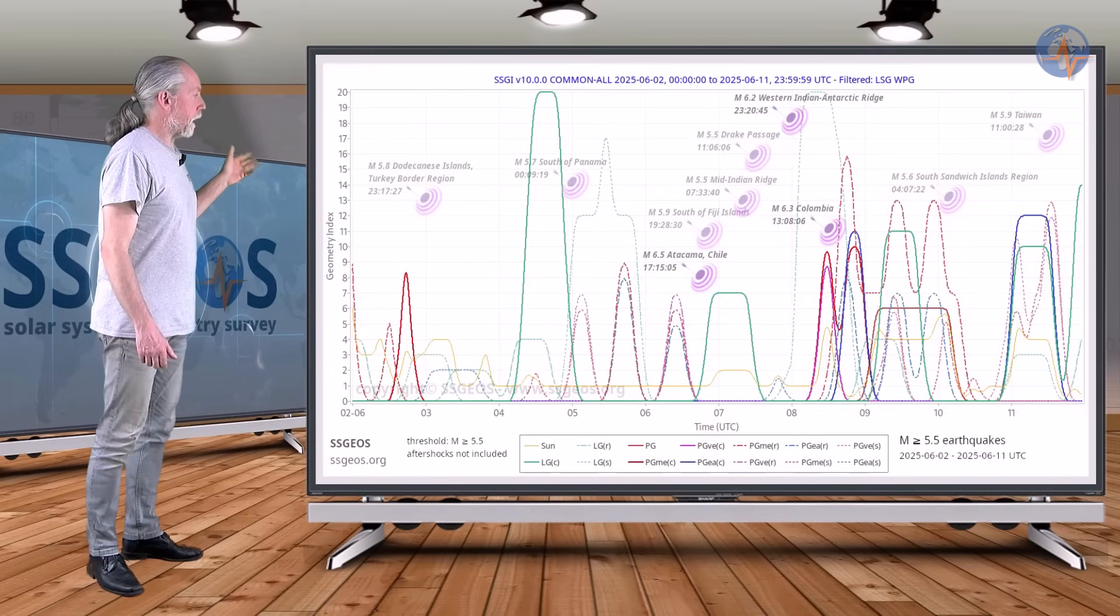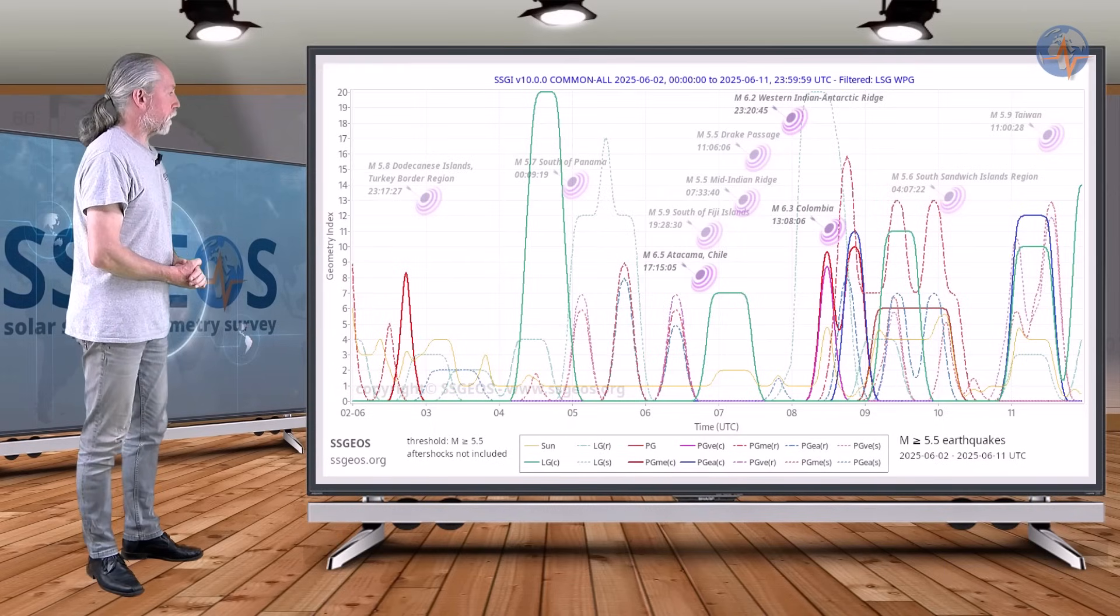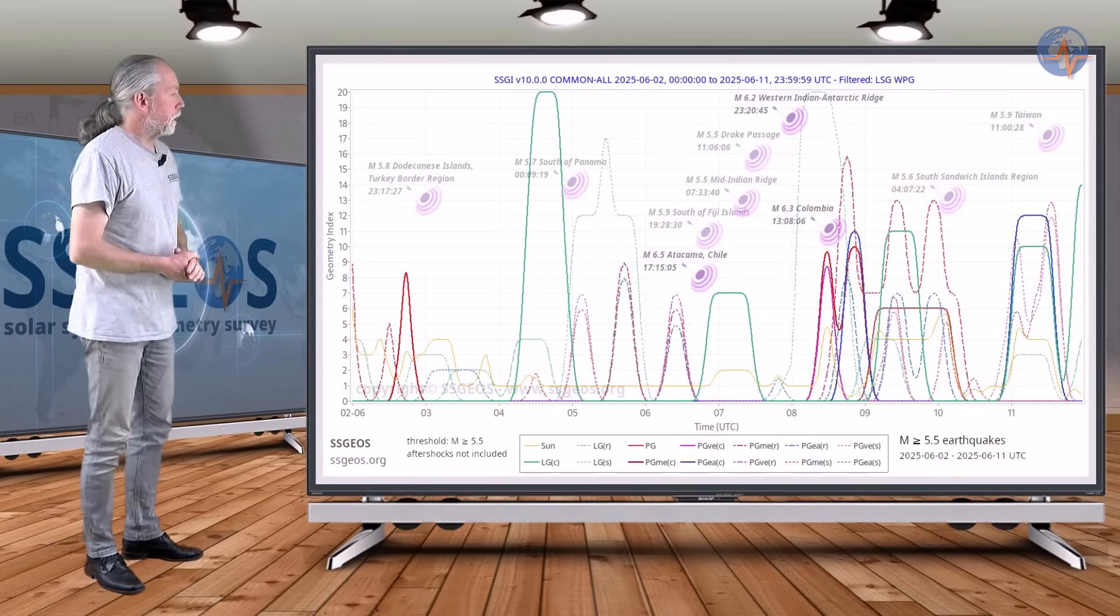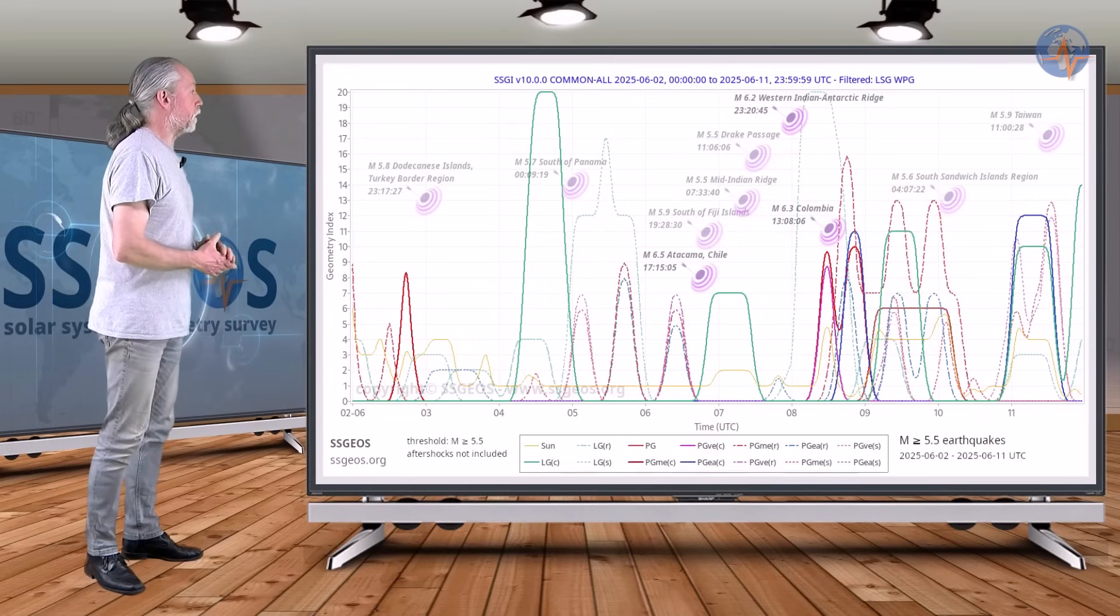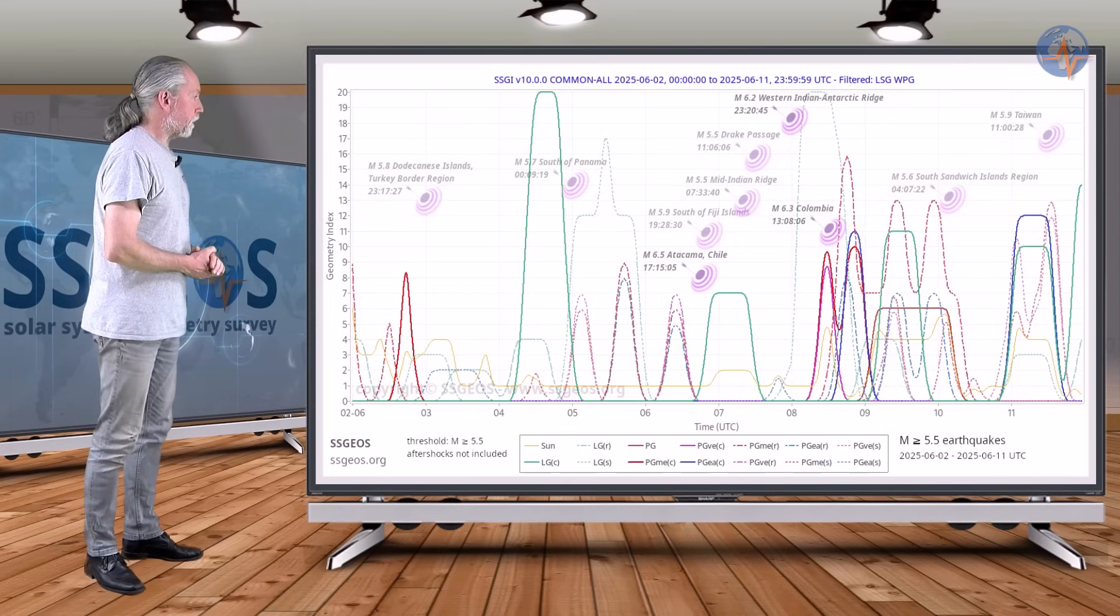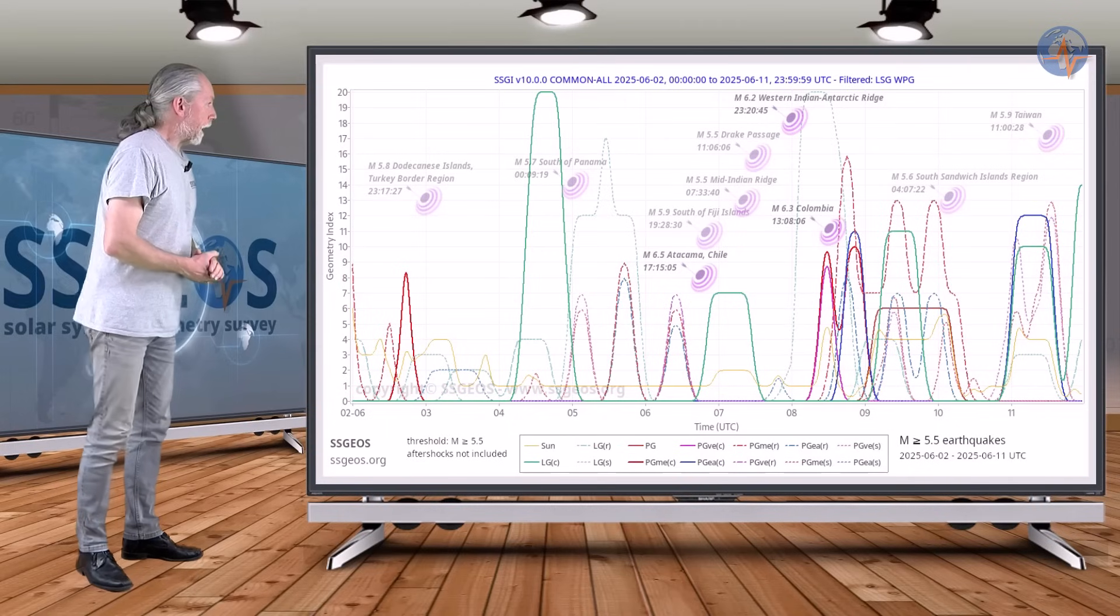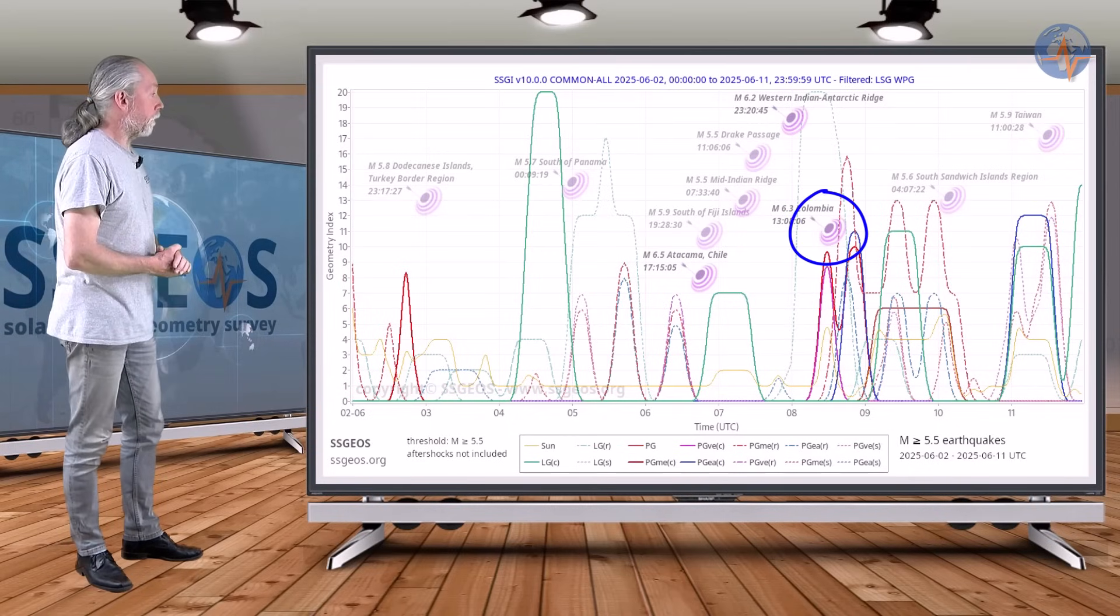There we have indeed an obvious cluster peaking magnitude 6.5 at Atacama Chile on the sixth, and also 6.2 at the Western Indian Antarctic Ridge later on the seventh, and we had a 6.3 in Colombia.